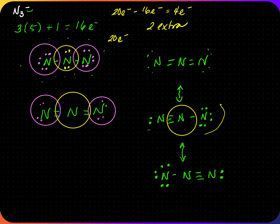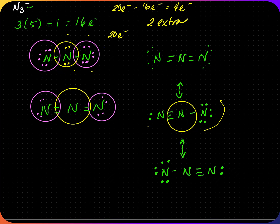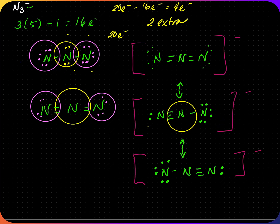So N₃⁻ has three possible Lewis dot structures, and since these are ions, each needs brackets with the charge on the outside.